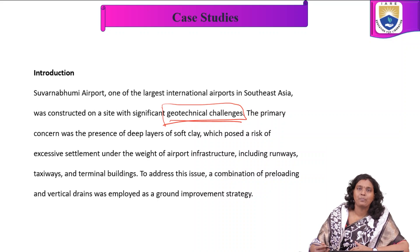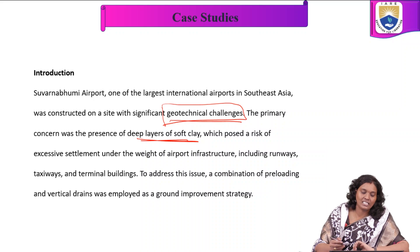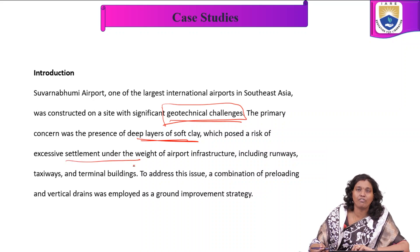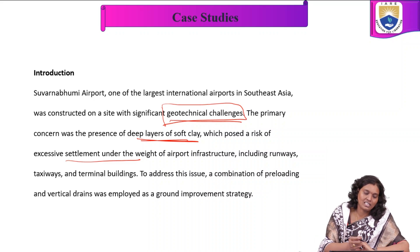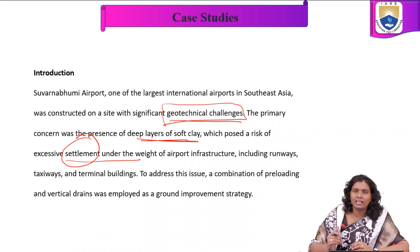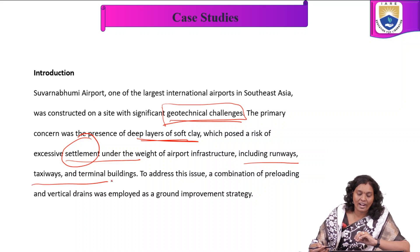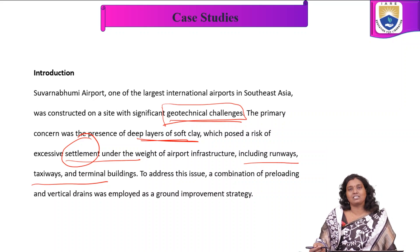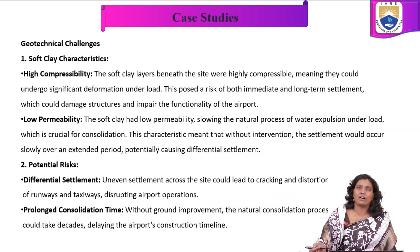The primary concern was the presence of layers of soft clay, which posed a risk of excessive settlement under the weight of airport infrastructure — including runways, taxiways, and terminal buildings. The risk factor is this settlement. To address the issue, a combination of preloading and vertical drains was employed as a ground improvement strategy. We need to understand the parameters involved: soft clay characteristics, potential risks, and various properties of that locality.